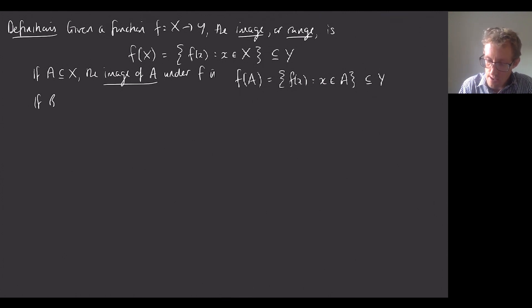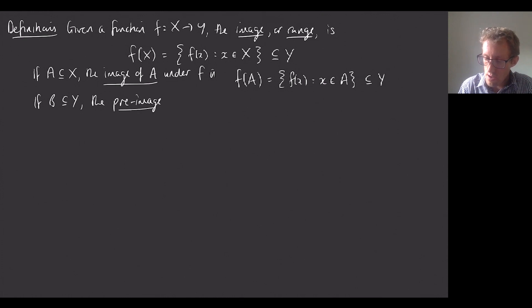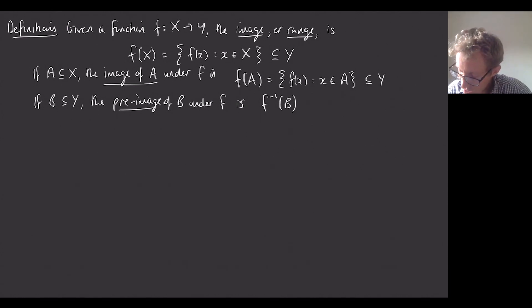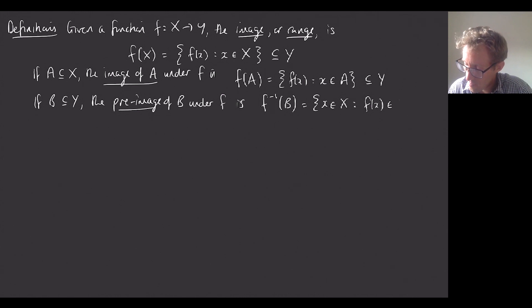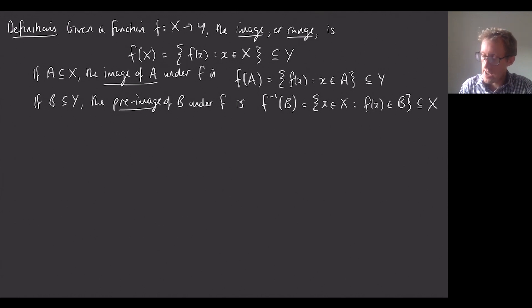Finally, if B is a subset of the codomain, we define the pre-image of B under f, written f⁻¹(B), as the set of all x in X such that f(x) is in B. This is a subset of the domain X — it's all the x's in X such that applying f to them lands us in the subset B.